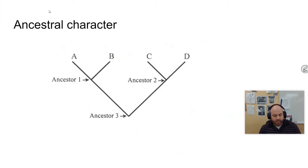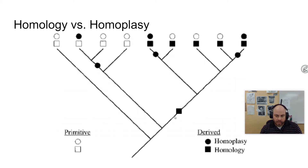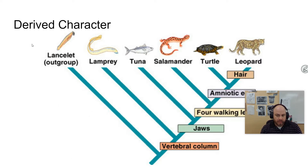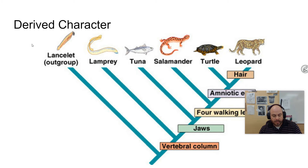Looking at the difference between ancestral versus derived characters: an ancestral character is a character shared by a broader group — all the organisms you're looking at in a particular group. This would be an ancestral character for all of these particular organisms. A derived character is a characteristic found only in the current taxon. For mammals, the derived character would be hair, whereas an ancestral character for all the ones shown here would be a vertebral column, except for the lancelet.